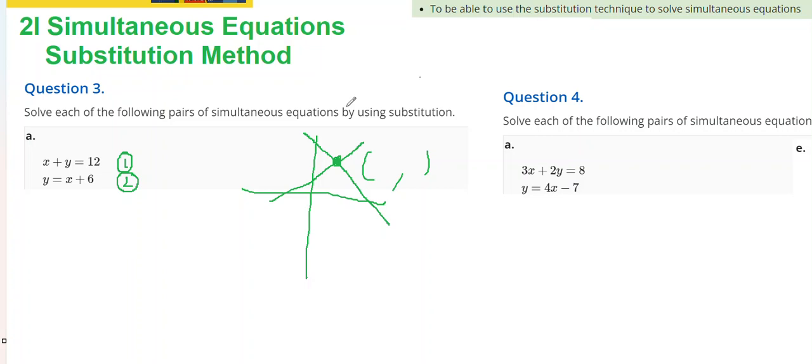Since one of the equations is in the form of y equals, I'm going to take what y equals and replace it in the first equation with that instead. So, the first equation is x plus y equals 12.